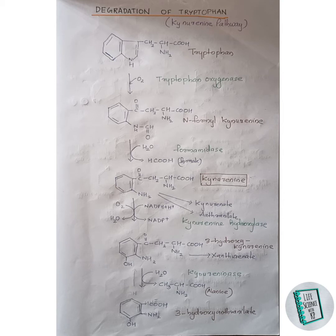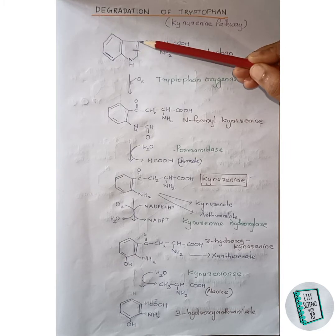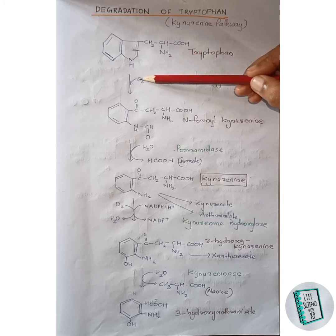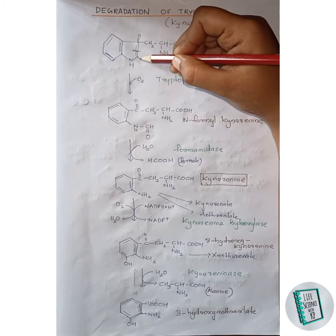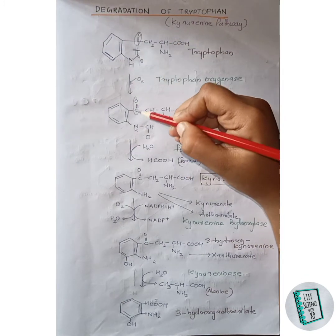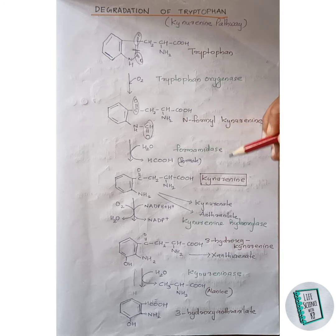In the kynurenine pathway, tryptophan in the presence of tryptophan oxygenase gives rise to N-formylkynurenine. What happens is the oxygen molecule comes and breaks the bond between the CH2 and the CH. One oxygen atom attaches to one carbon forming a double bond, and the second oxygen atom attaches to the other carbon forming another double bond. Thus N-formylkynurenine is formed.